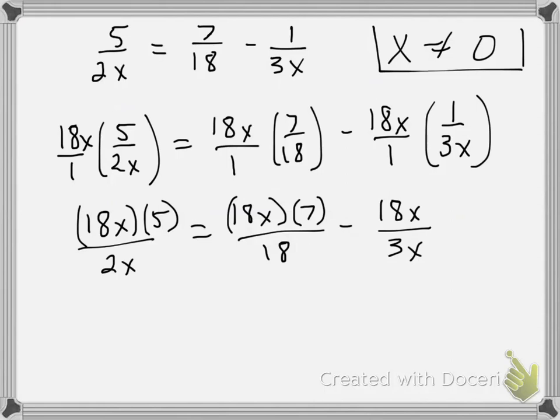Now, why in the world would I not just go ahead and multiply 18 and 5 in the first term or 18 and 7 in the second term? Remember, the whole reason why we're multiplying by 18x is so we get rid of these fractions. And so notice in the first term, the x cancels, and 2 goes into 18 9 times.